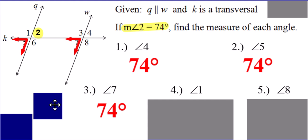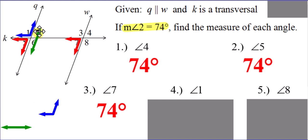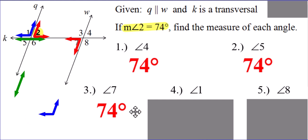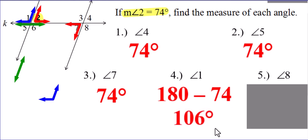What about angle one? It just so happens that angle one and angle five are a pair of supplementary angles. Or maybe you noticed, since we already had the measure of angle two at the very beginning, that angle one and angle two are a pair of supplementary angles because together they form a straight angle. So what do we do with supplementary angles? We can take 180 minus the measure of the angle that we already knew — 74 degrees — and that will give us the measure of angle one. So what is that? 106 degrees.